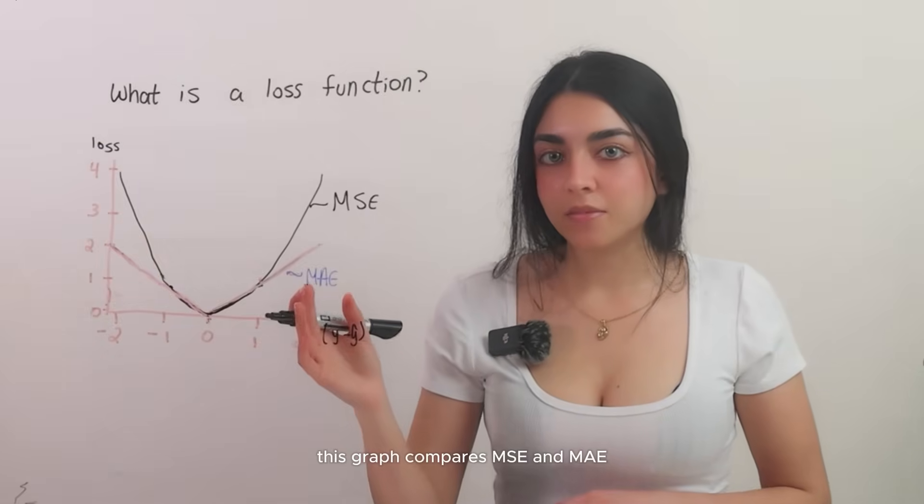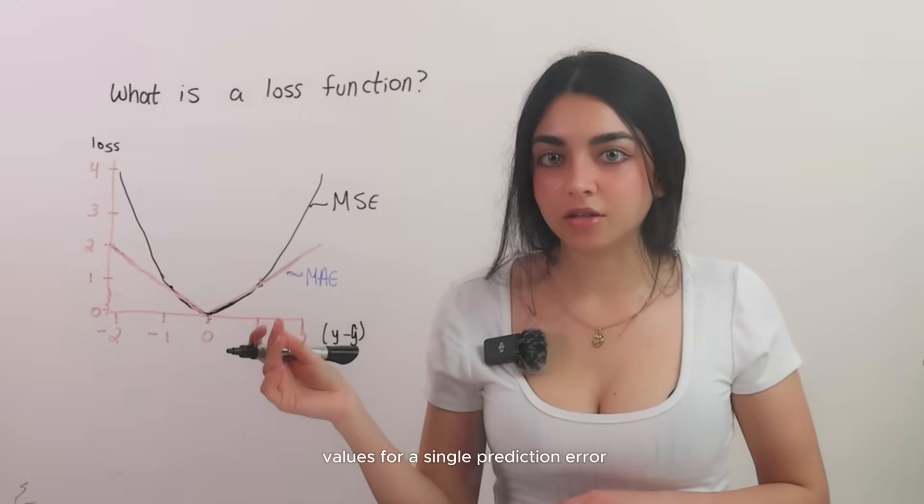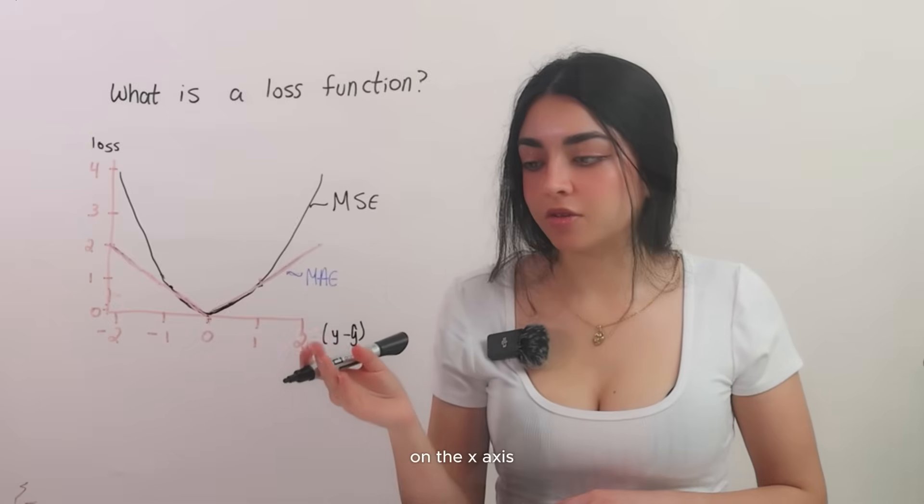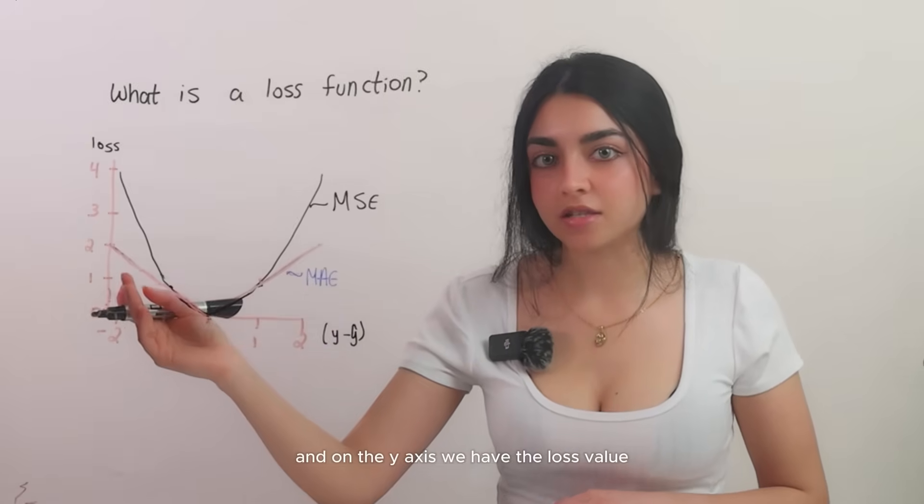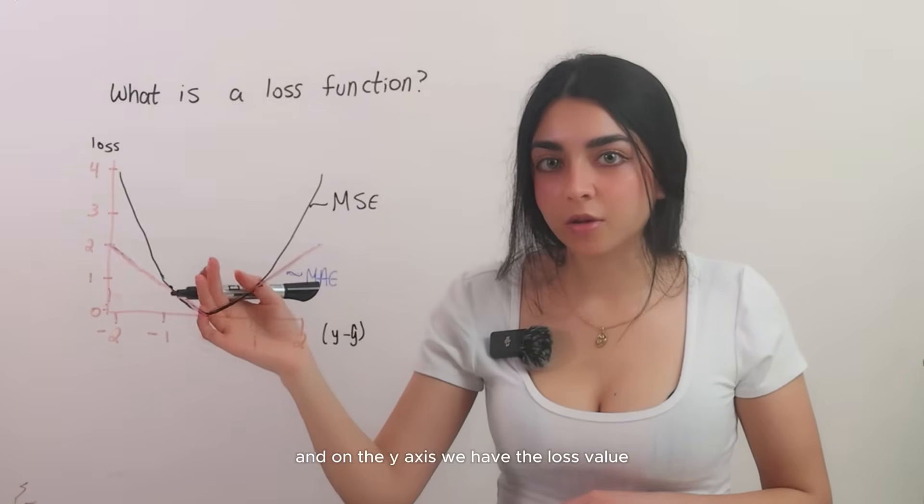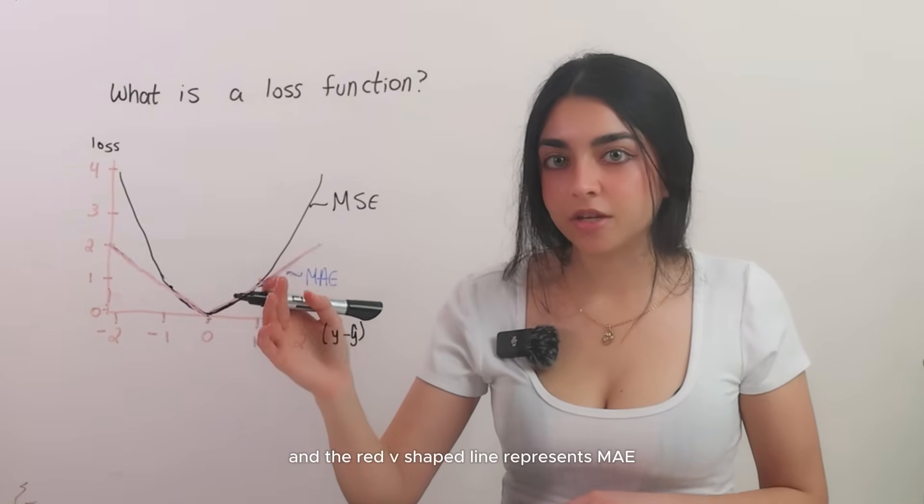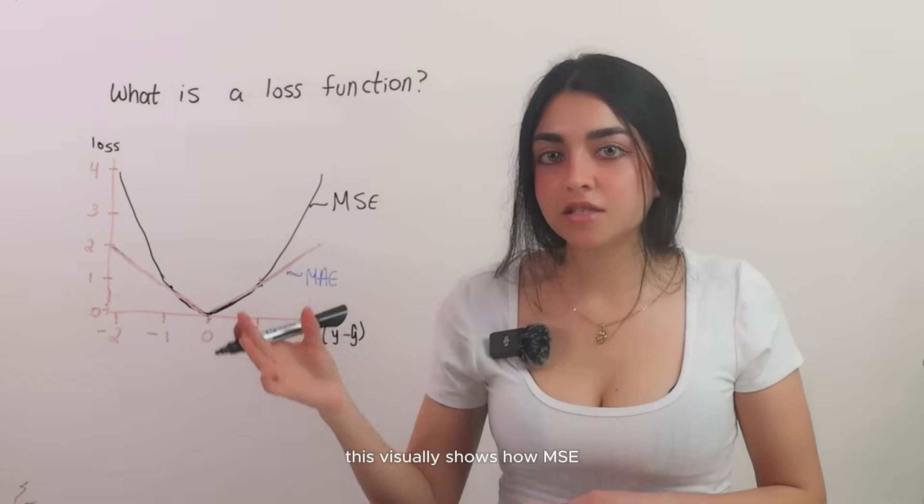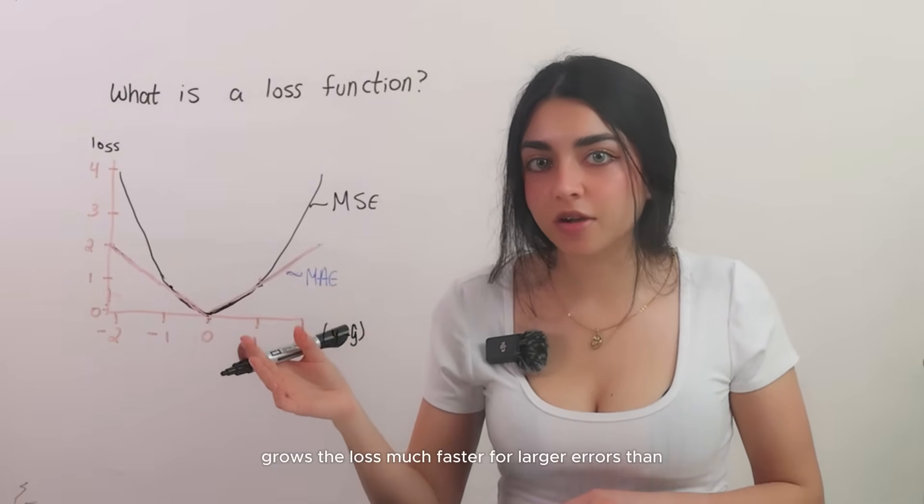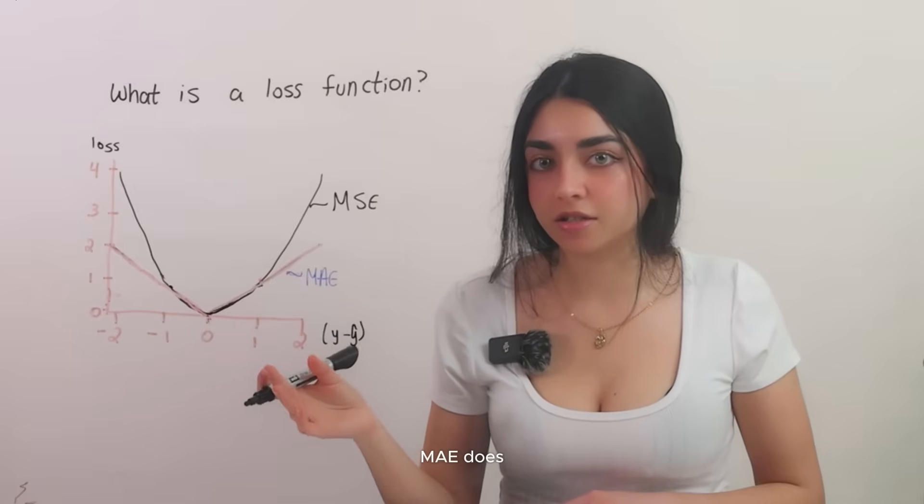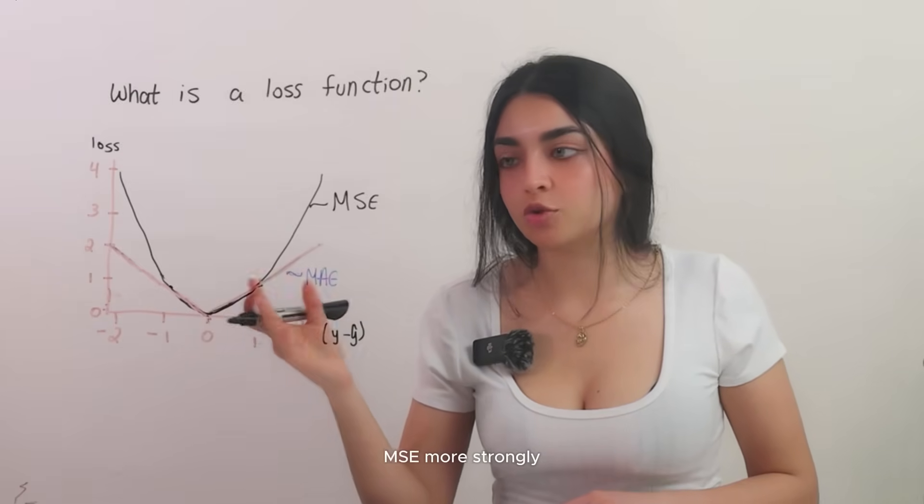This graph compares MSE and MAE values for a single prediction error. On the x-axis, we have the prediction error, y minus y hat, and on the y-axis, we have the loss value. The black parabolic line represents MSE, and the red v-shaped line represents MAE. This visually shows how MSE grows the loss much faster for larger errors than MAE does, highlighting how outliers can affect MSE more strongly.